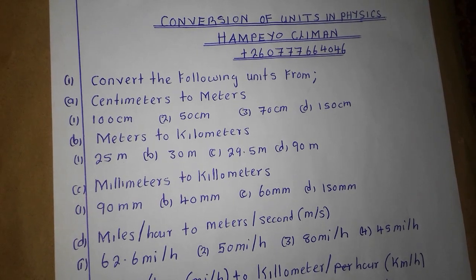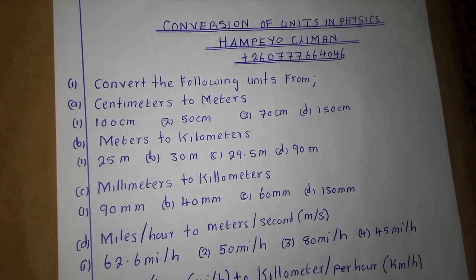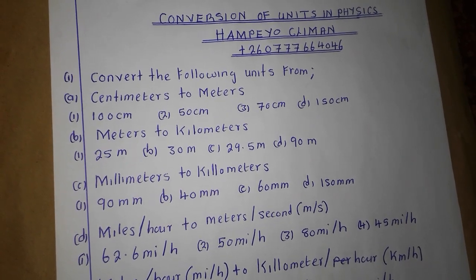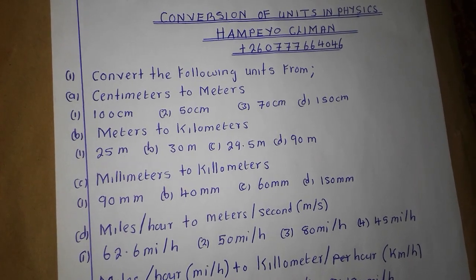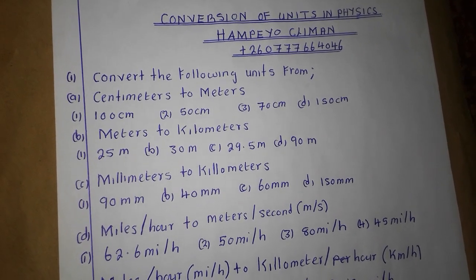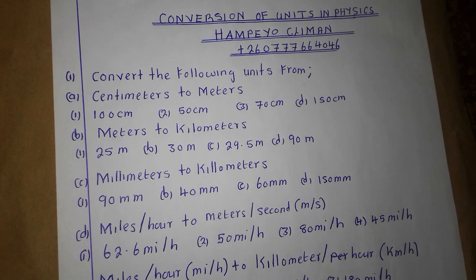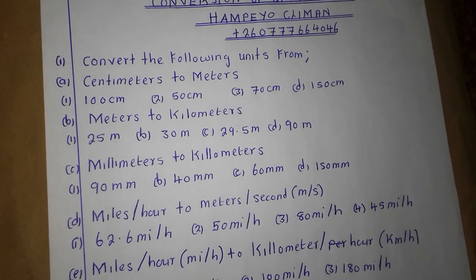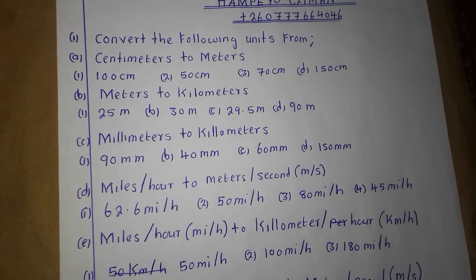We have conversion of units in physics. The question is saying: convert the following units from one particular unit to another. Part A is saying from centimeters to meters. I will be doing two questions, then the other ones you will do on your own. Let me start: we convert 100 centimeters into meters.